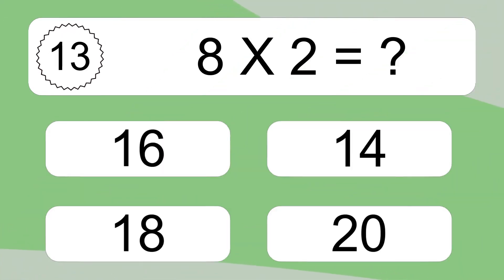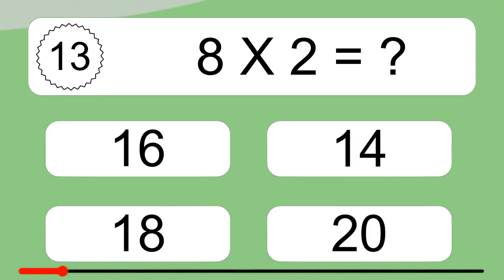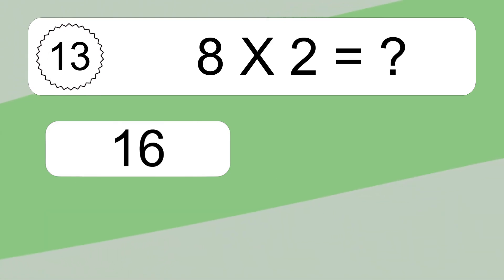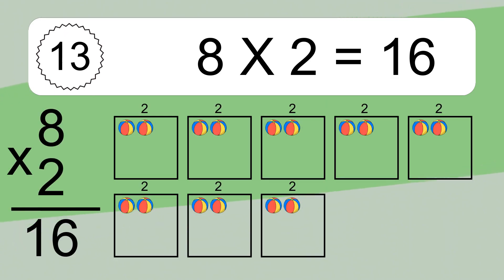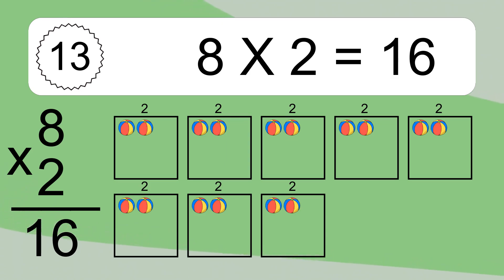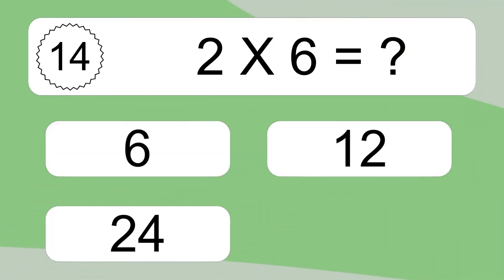8 times 2 equals what? 8 times 2 equals 16. We have 8 boxes, and each box has 2 colorful balls inside. If you count all the balls in all the boxes together, you will have 8 times 2 balls. This equals 16 balls.